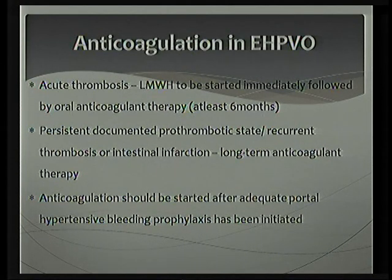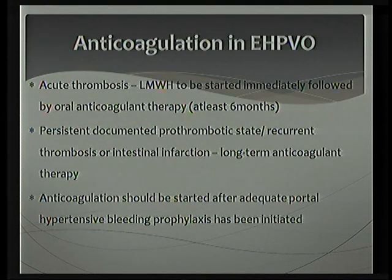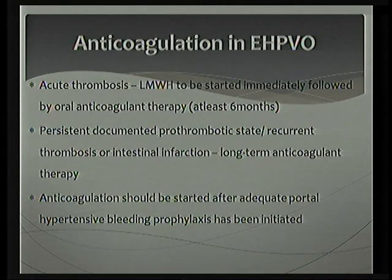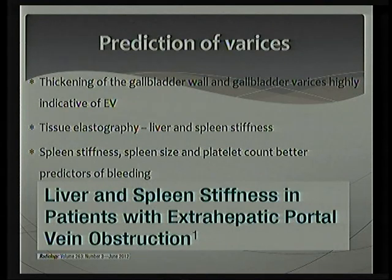Regarding the role of anticoagulation in EHPVO: it is indicated especially when there is acute thrombosis of the portal vein. You initially start with low molecular weight heparin, then replace it with oral anticoagulant therapy for at least six months. For chronic EHPVO, anticoagulant therapy is mandatory when you have a documented prothrombotic state such as protein C or protein S deficiency. It should be borne in mind that anticoagulation should be instituted only after variceal bleed prophylaxis has been initiated, otherwise it can lead to troublesome bleeding.